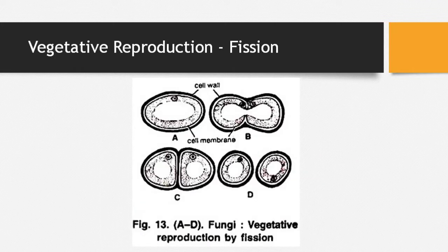This first diagram shows that the reproduction is by fission. An example is yeast — a cell undergoes a fission process. The cell elongates and along with it the nucleus also elongates. Finally, you can see in diagram C that a notch is developed. This notch grows into the cell, helping divide one cell into two, and two into four. This helps with vegetative reproduction via fission.